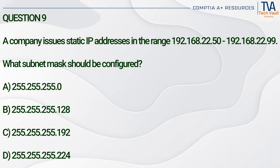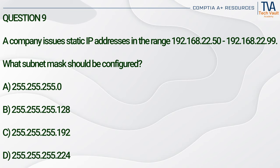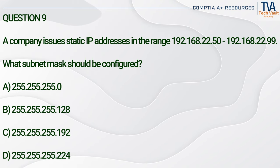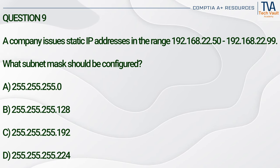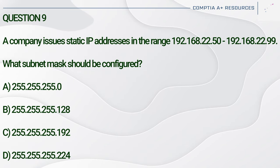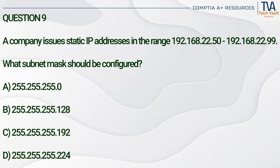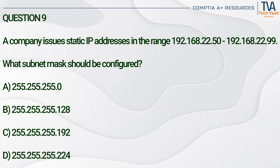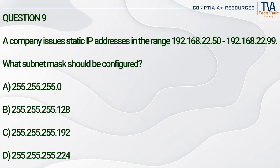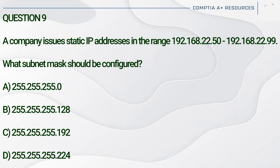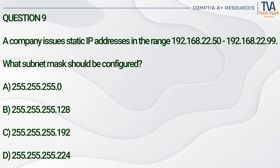Question 9. A company issues static IP addresses in the range 192.168.22.50 to 192.168.22.99. What subnet mask should be configured? A. 255.255.255.0. B. 255.255.255.128. C. 255.255.255.192. D. 255.255.255.224.